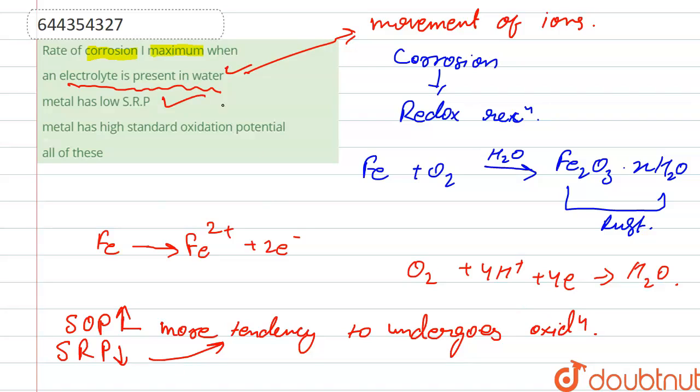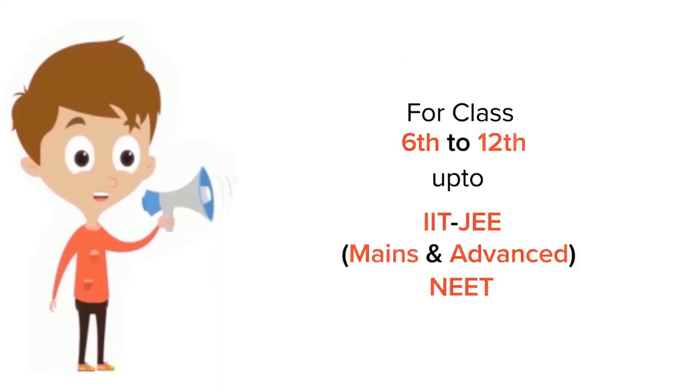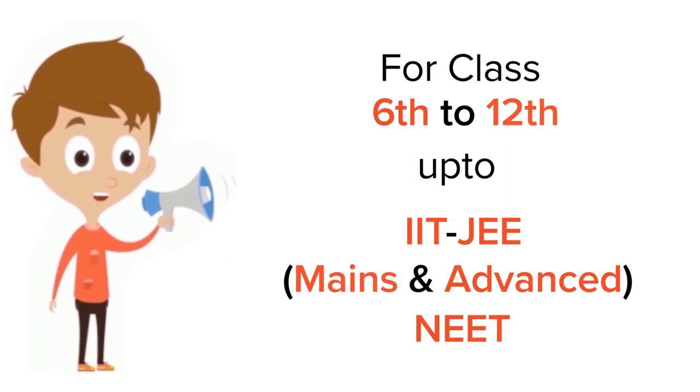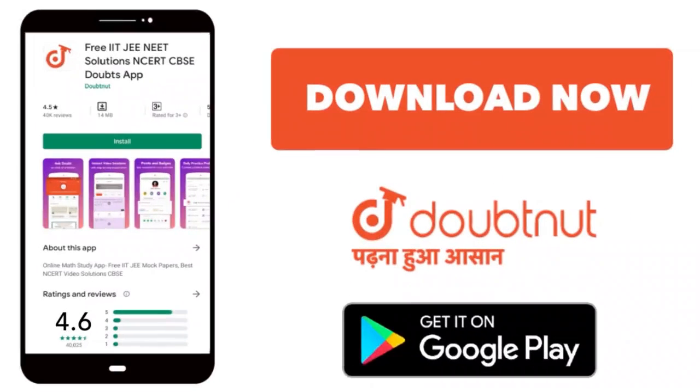So both are correct. So our correct option is all of these, that is D. Thank you. For class 6 to 12th, IIT-JEE and NEET level, trusted by more than 5 crore students, download Doubtnut app today.